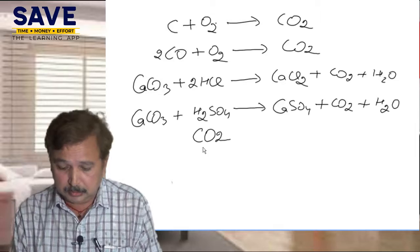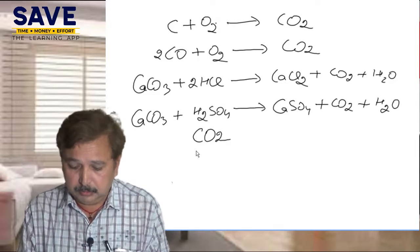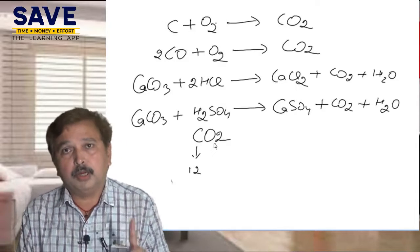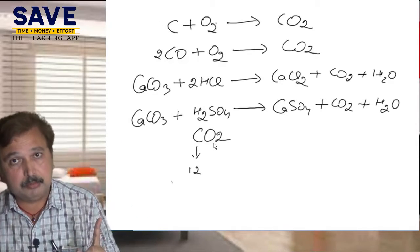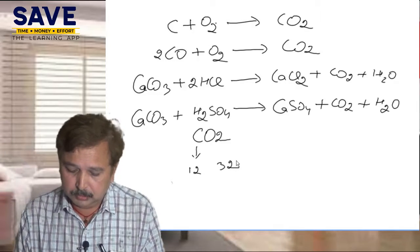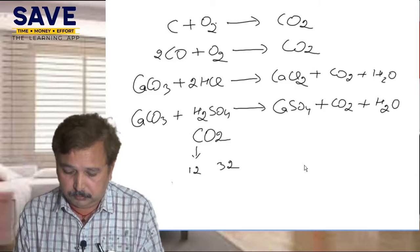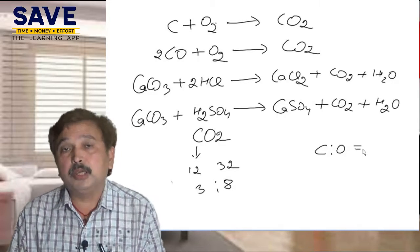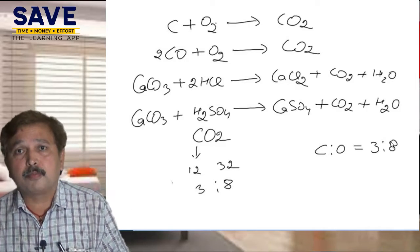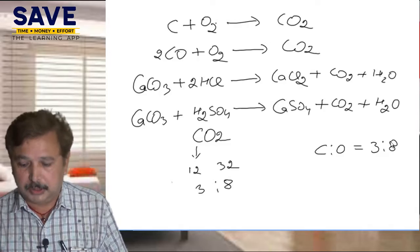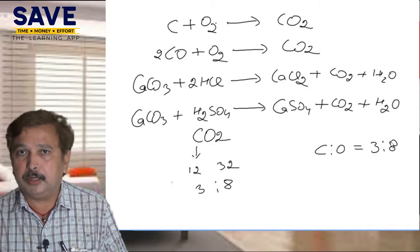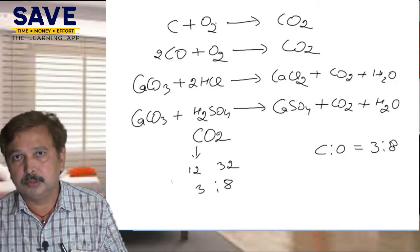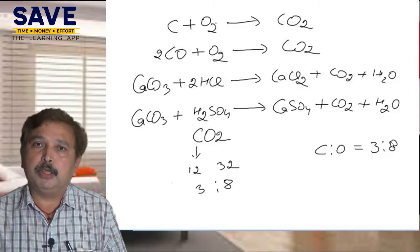What is the definite proportion here? Carbon has an atomic mass of 12, and oxygen has two atoms so 2 multiplied by 16 equals 32. We can divide both by 4: 4 times 3 is 12, 4 times 8 is 32, so carbon to oxygen equals 3 is to 8. In carbon dioxide, the ratio of carbon to oxygen by mass is always fixed at 3:8. This is the second law of chemical combination.